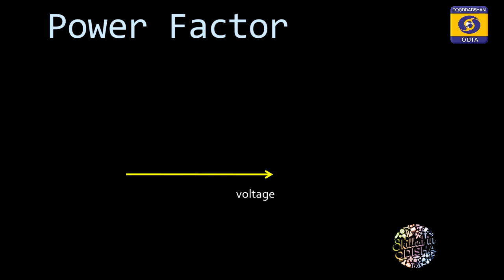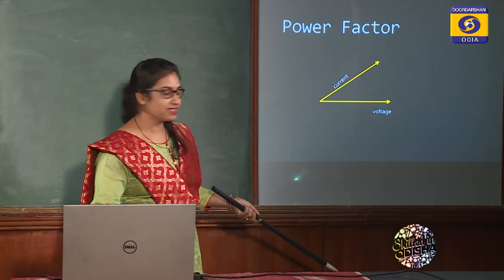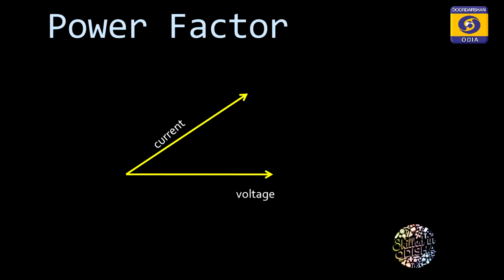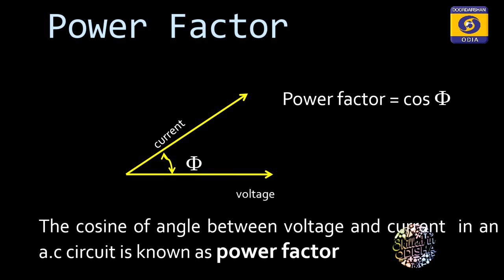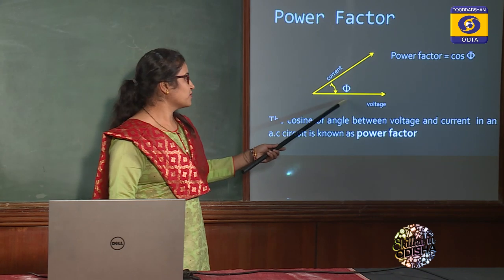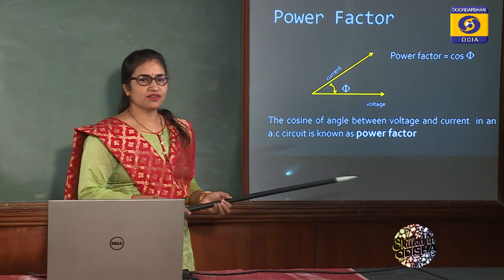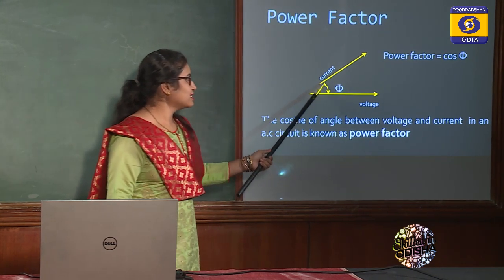If I have a phasor of current and a phasor of voltage, then the angle theta becomes our power factor angle. By definition, the cosine of the angle between voltage and current in an AC circuit is known as the power factor. My question is: why does this angle develop?